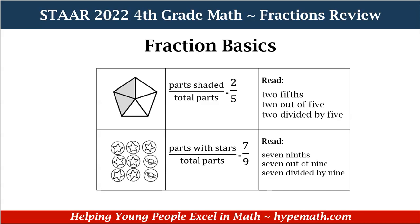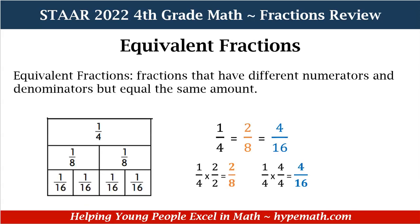Now let's look at the bottom row. We have one, two, three, four, five, six, seven, eight, nine shapes with some type of object in them. We are going to focus on the circles with the stars in them. There are nine total parts, and focusing on the ones with stars we have one, two, three, four, five, six, seven circles with stars, so our fraction is seven over nine. We can read this as seven-ninths, seven out of nine, or seven divided by nine.